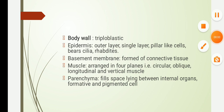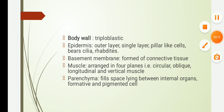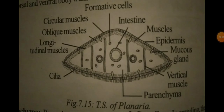The fourth layer is the parenchyme, also known as mesenchyme. It is a tissue that fills the space between the internal organs, is in the form of a network, and contains many formative cells and pigmented cells. The transverse section picture of the body wall of Planaria clearly shows four different types of muscles.